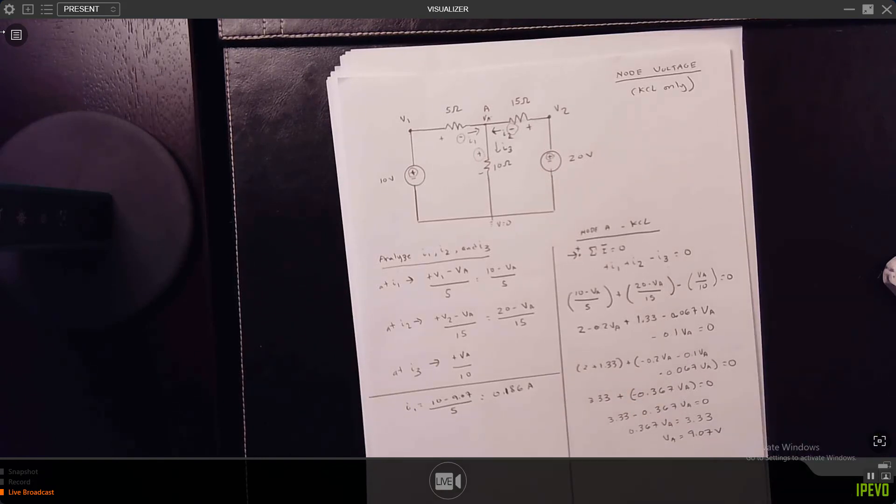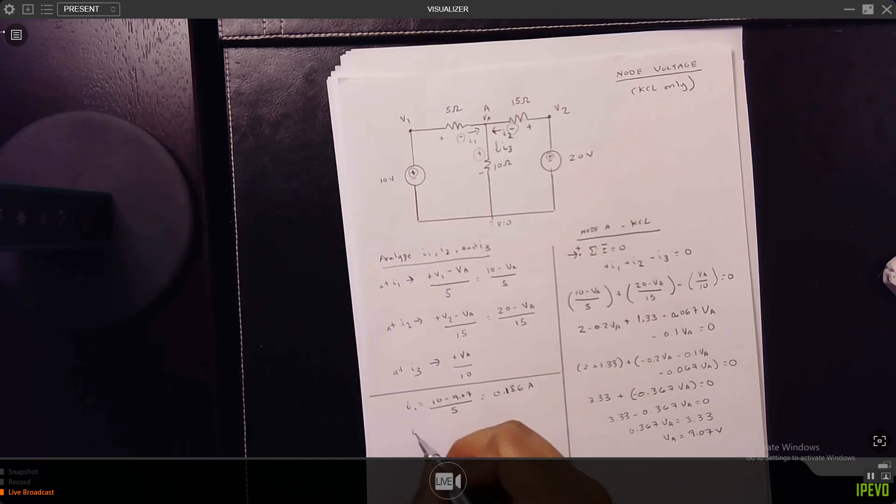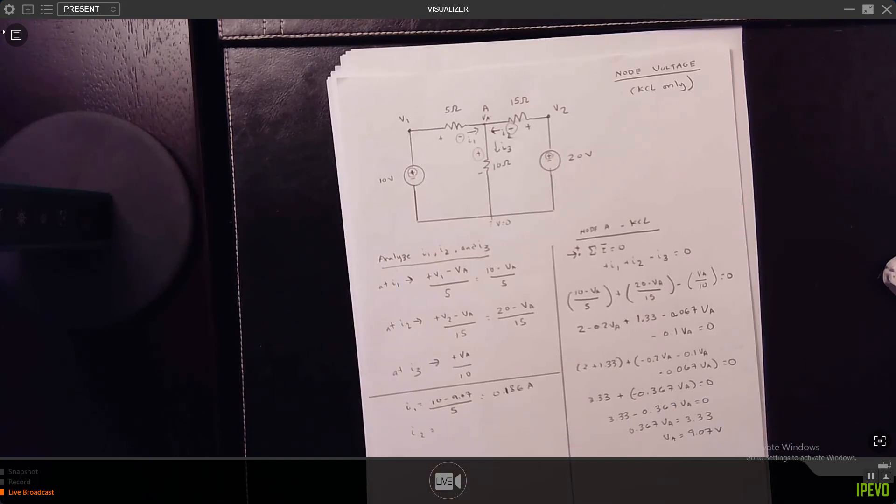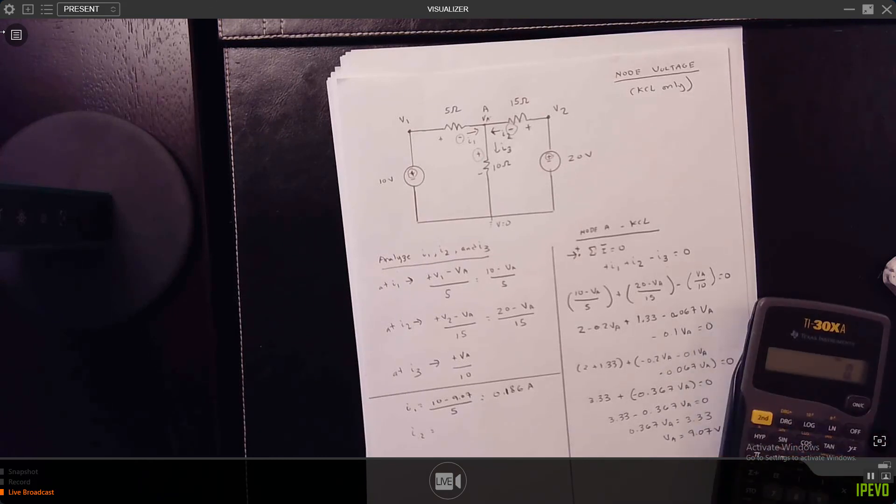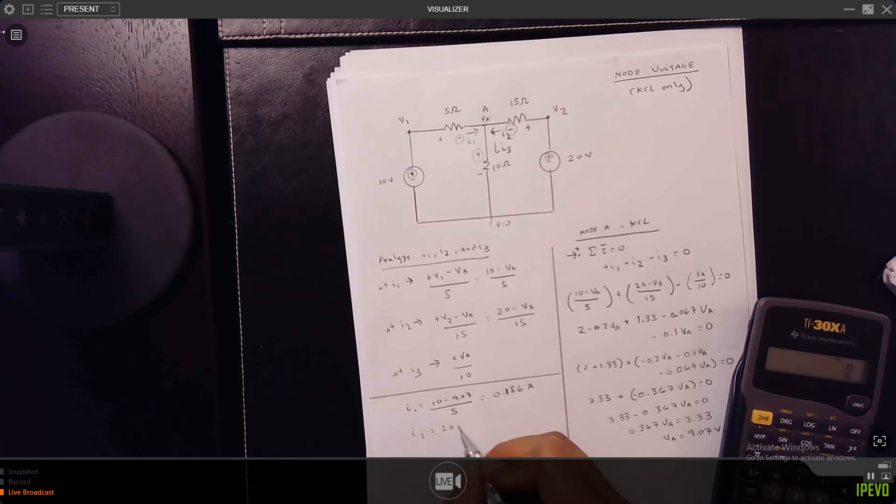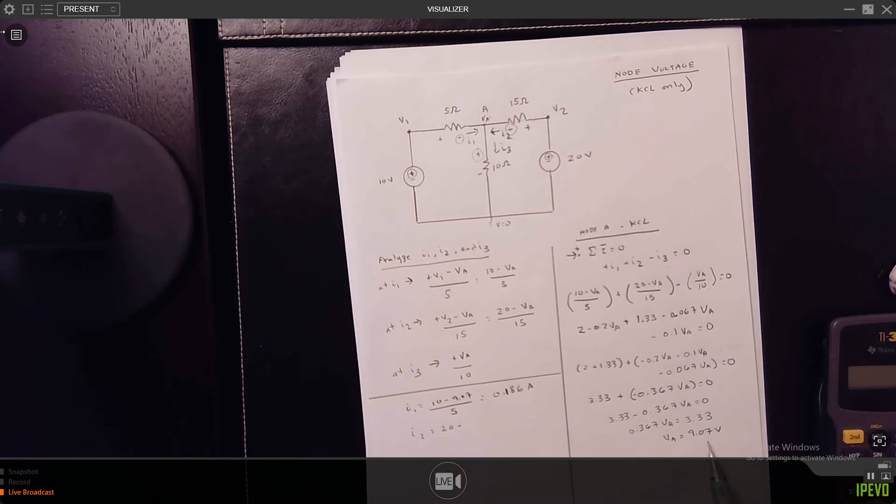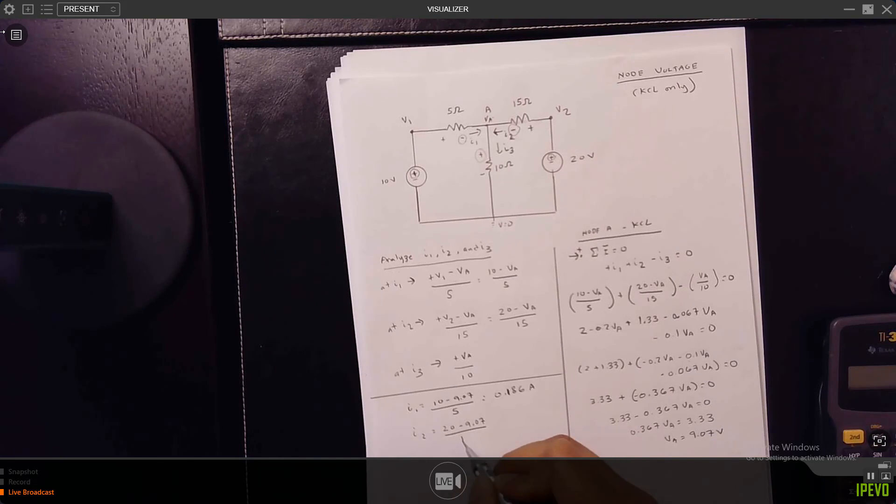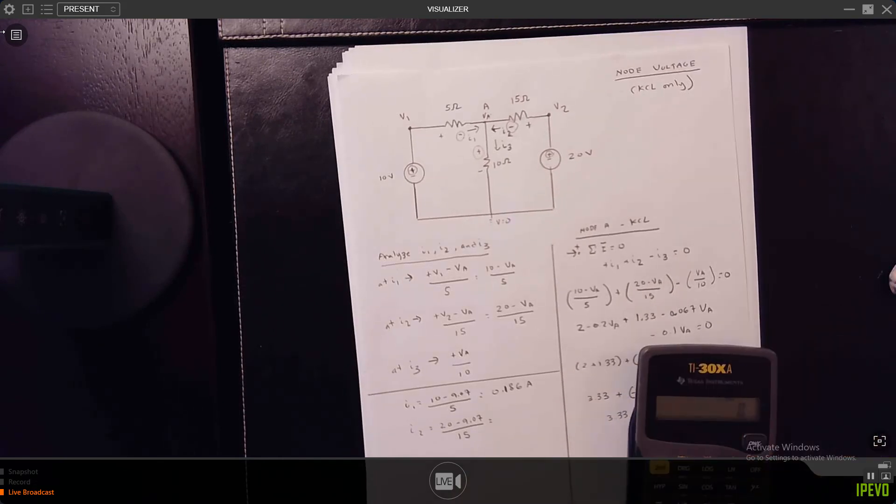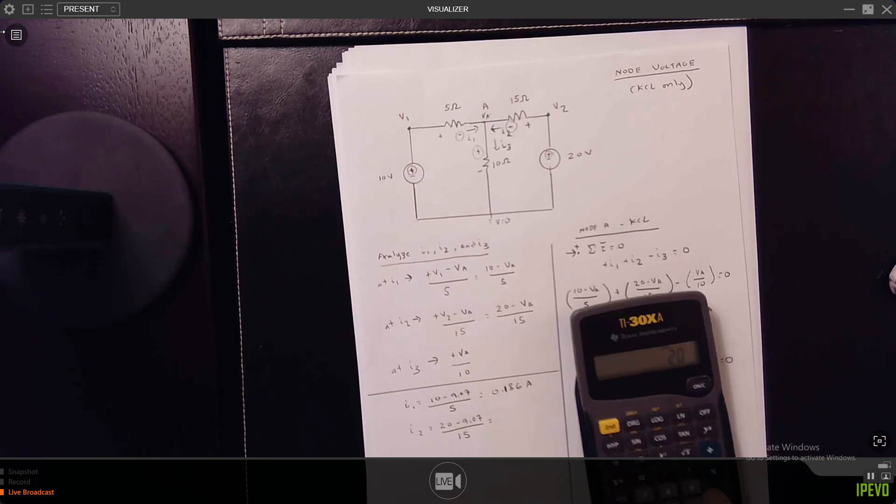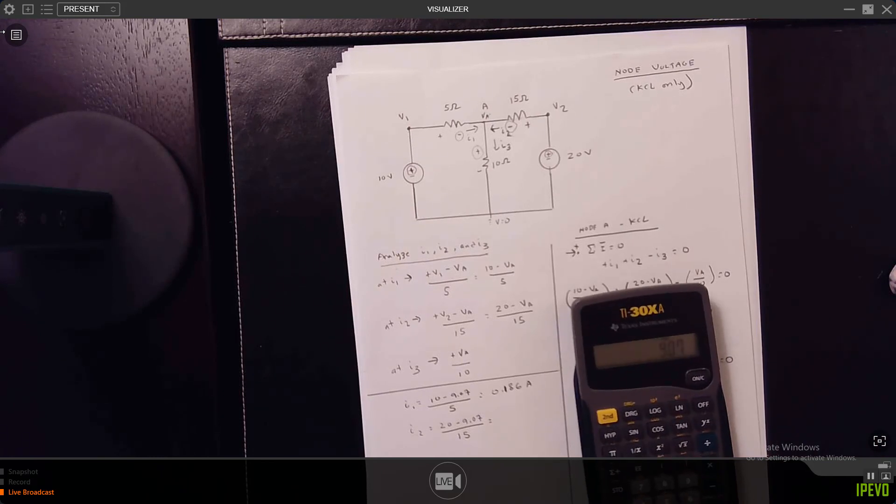I2 is V2, which is 20 minus VA, which is 9.07, all over 15. So 20 minus 9.07 is 0.73 amps.